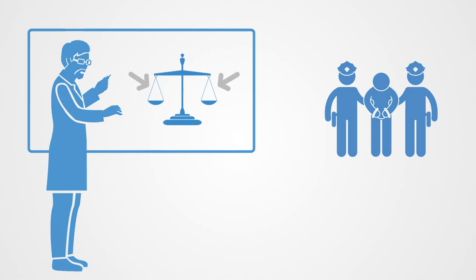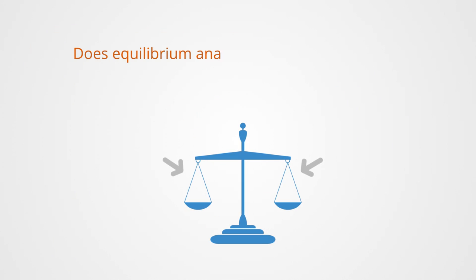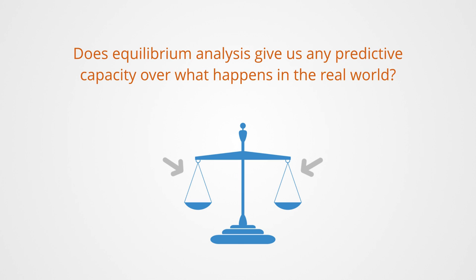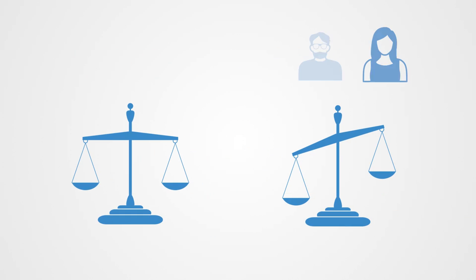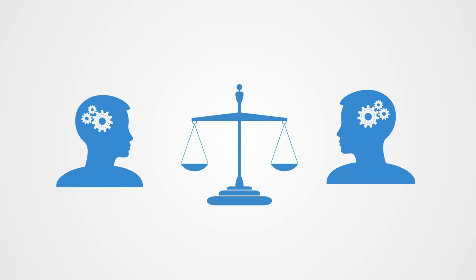It is then legitimate for us to ask, does equilibrium analysis give us any predictive capacity over what happens in the real world? Often the outcome of experiments is not an equilibrium as predicted by the theory. This is mainly because people do not fully reason through the game in a full logically consistent fashion. Equilibrium is a point where everyone has figured out what everyone else will do. Thus behaviorally, it often does not predict what people will do the first time they play the game.